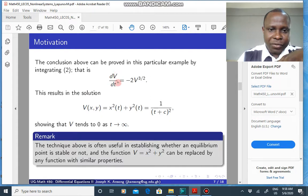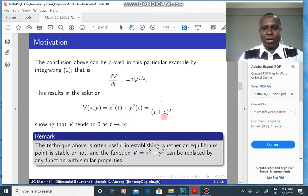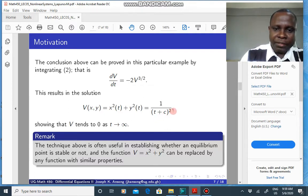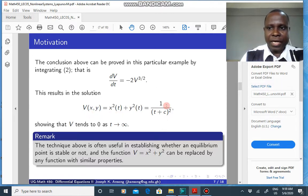So from that equation, you see that dV/dt is negative 2V raised to the power 3 over 2. You can separate variables and solve for V. When you solve for V, you get this equation here, 1 over (t plus c) squared. And you see that as t goes to infinity, V actually goes to zero, as we deduced previously.